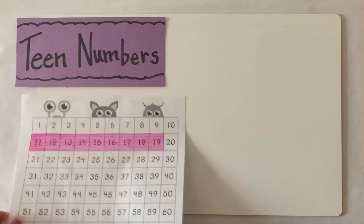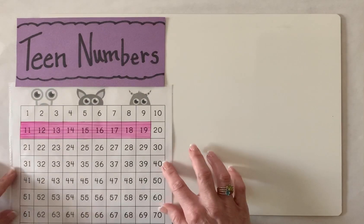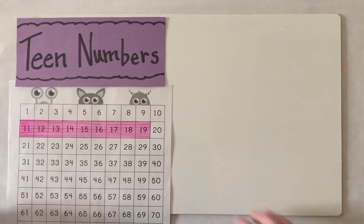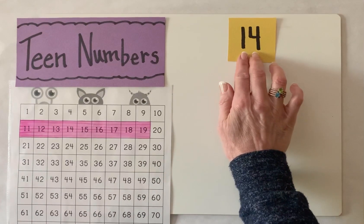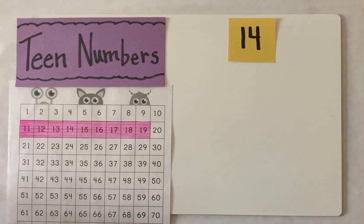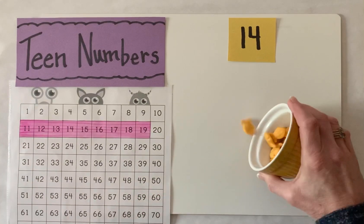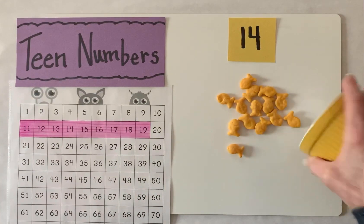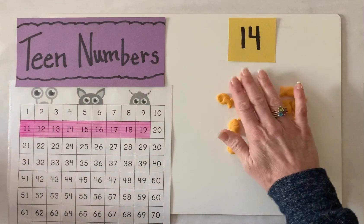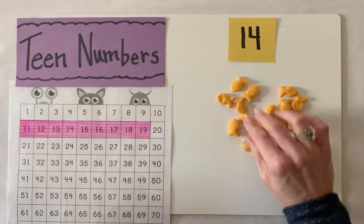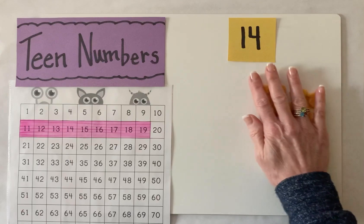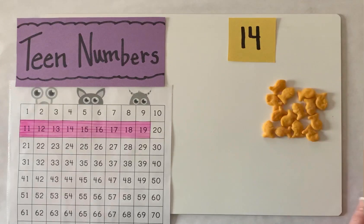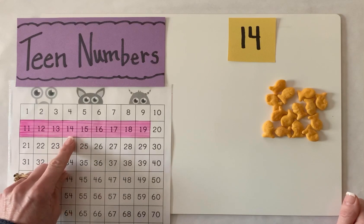So let's take a teen number and think about what that teen number means. Let's use the number 14. I'm going to dump out 14 goldfish. I know it's 14 because I've already counted them, but just in case, let's make our number 14.